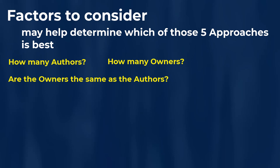Generally speaking, the author is always going to be a person. But the owner could be a business — an LLC, a corporation, partnership, and so on. Just a quick recap of the factors we've touched on so far: how many authors are there, how many owners are there, and are the owners the same as the authors or are they different?